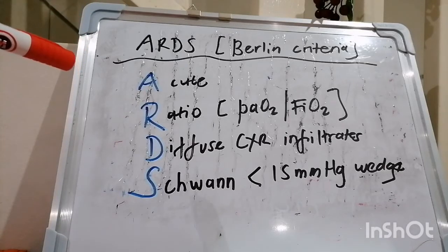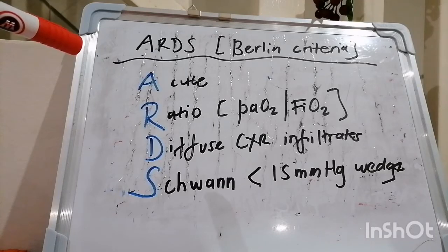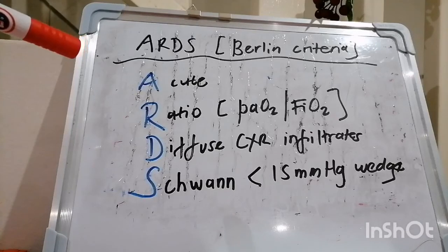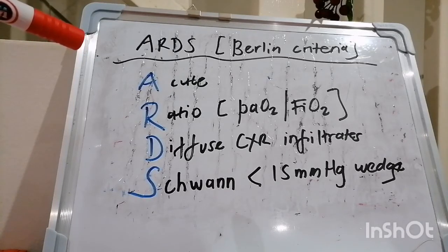R stands for the ratio, and so we talk about the PF ratio. That's the partial pressure of oxygen in the arterial blood, divided by the fraction of inspired oxygen, in millimeters mercury.